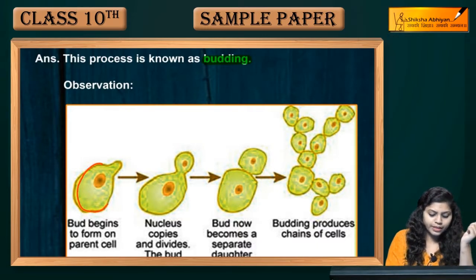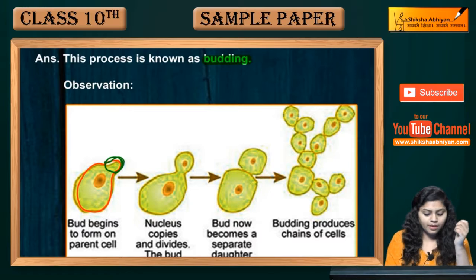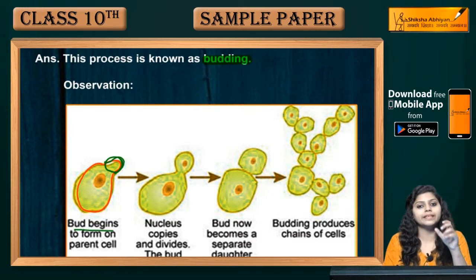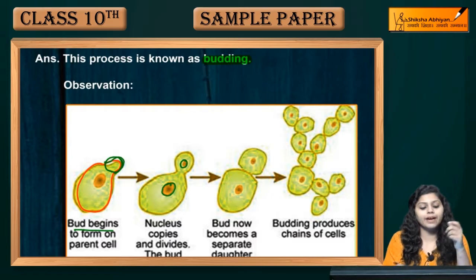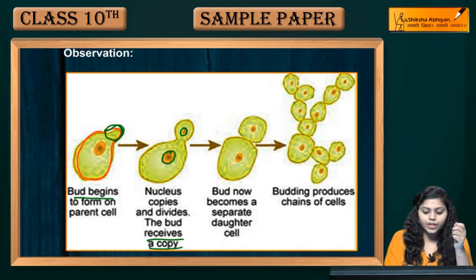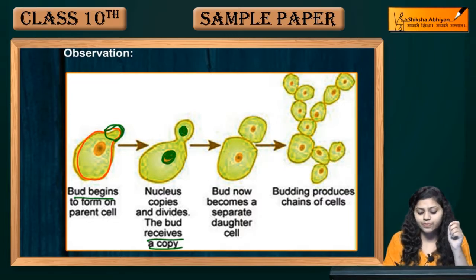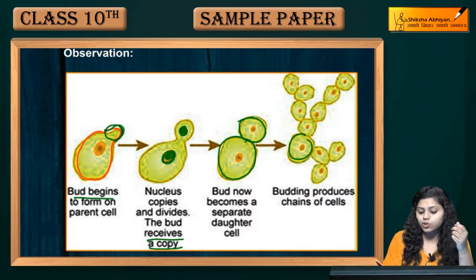If we show it in yeast, a small bud-like structure will arise from the yeast. The bud begins to form on the parent cell. The nucleus will copy and divide. The bud will receive a copy of the nucleus. Then the bud will separate from the parent.